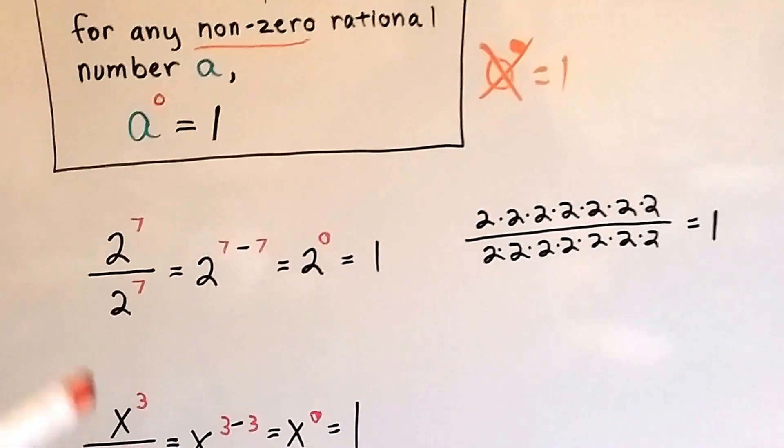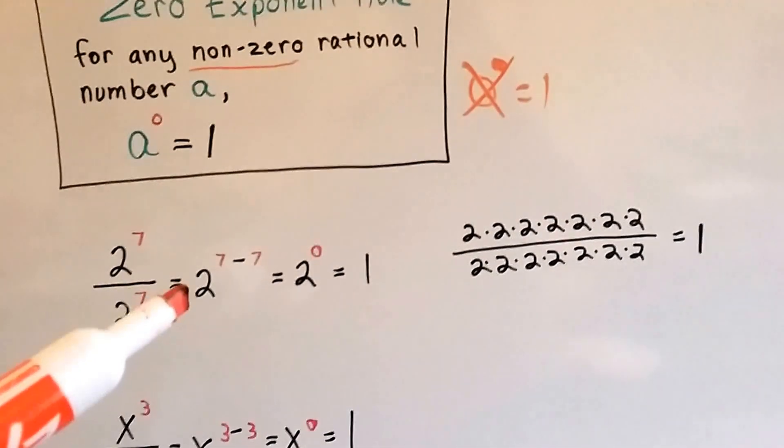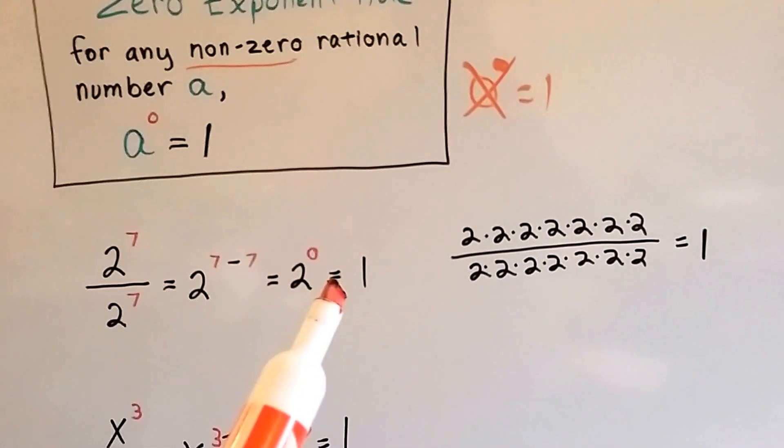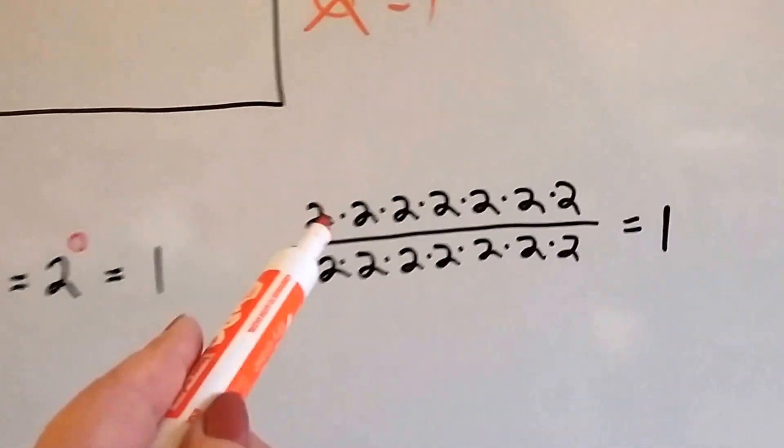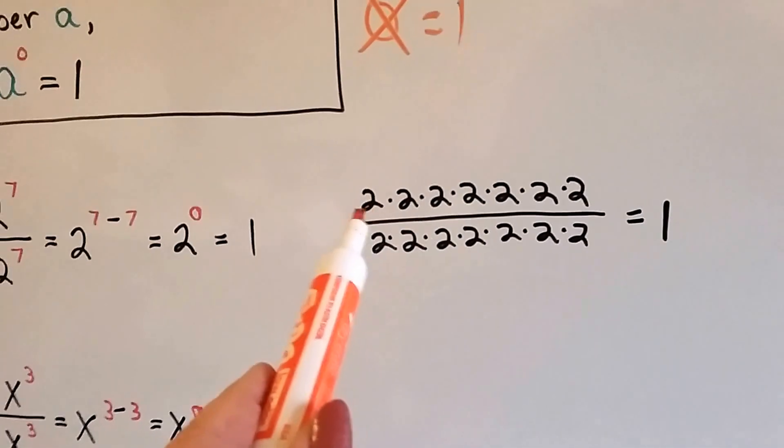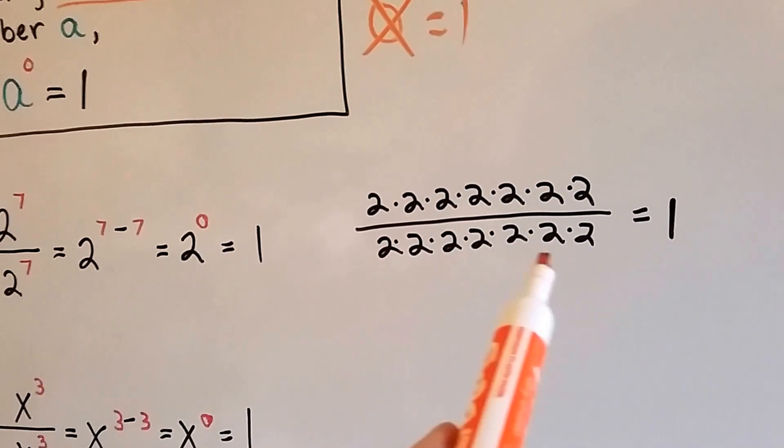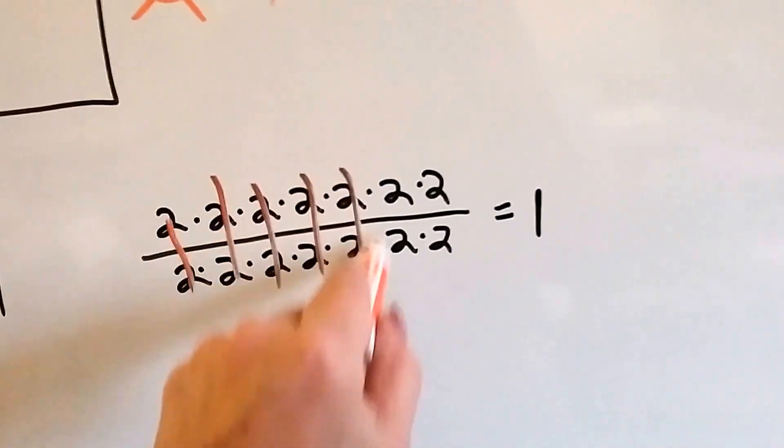So let's take a look at this. We've got 2 to the 7th power over 2 to the 7th power. When we do the 7 minus 7 for the powers, we get 2 to the 0 power. And that's going to equal 1. So it's as if we had 2 seven times on the top as the numerator and seven times on the bottom as the denominator, and we canceled each one of these out.